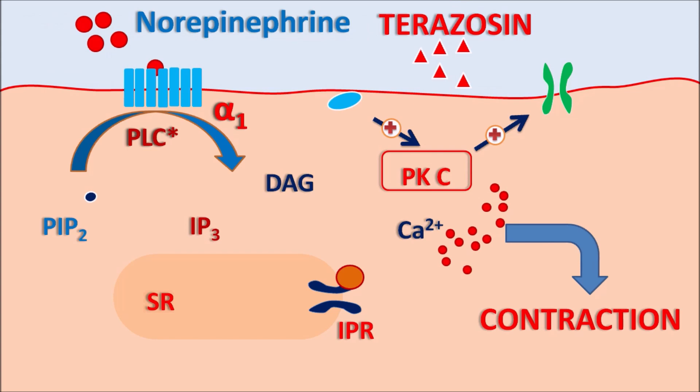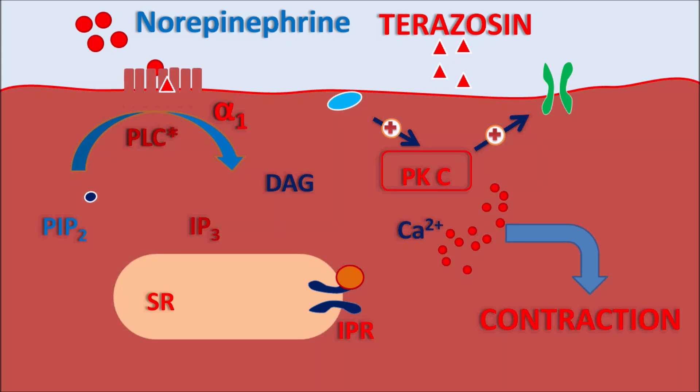Terazosin acts as an antagonist at these alpha-1 receptors. It blocks these receptors, thereby inhibiting norepinephrine activity, resulting in relaxation of the vascular smooth muscle as well as the bladder neck, prostate capsule, and urethra. All these produce increased vasodilation and increased urinary flow.